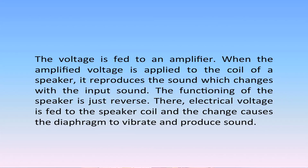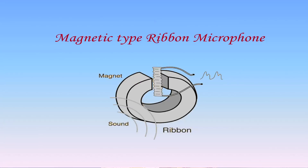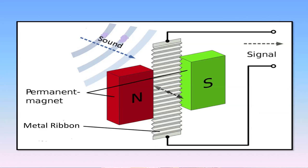When the amplified voltage is applied to the coil of a speaker, it reproduces the sound which changes with input sound. The functioning of the speaker is just the reverse — electrical voltage is fed to the speaker coil and the change causes the diaphragm to vibrate and produce sound. In a magnetic type ribbon microphone, a ribbon of metal is suspended in a magnetic field. Sound waves cause the ribbon to vibrate, changing the magnetic flux through the ribbon, which induces an electric current that drives a speaker. The ribbon microphone senses pressure gradient and not just pressure, so it detects sounds from both sides.